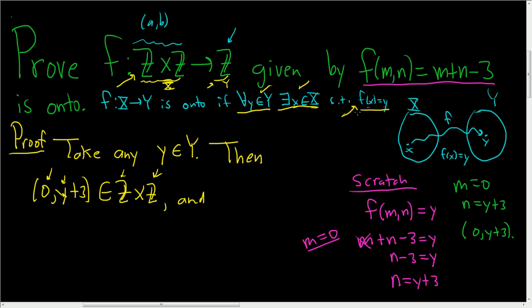Now we just have to show that f(x) is equal to y. So f of, well, this is our x. So (0, y+3). And this is the verification part. You just have to carefully plug everything in. So this is our m, and this is our n. It's going to be m, which is zero, plus n, which is y plus three. And then we have the minus three at the end. So that's simply y plus three minus three. These cancel, so we get y.